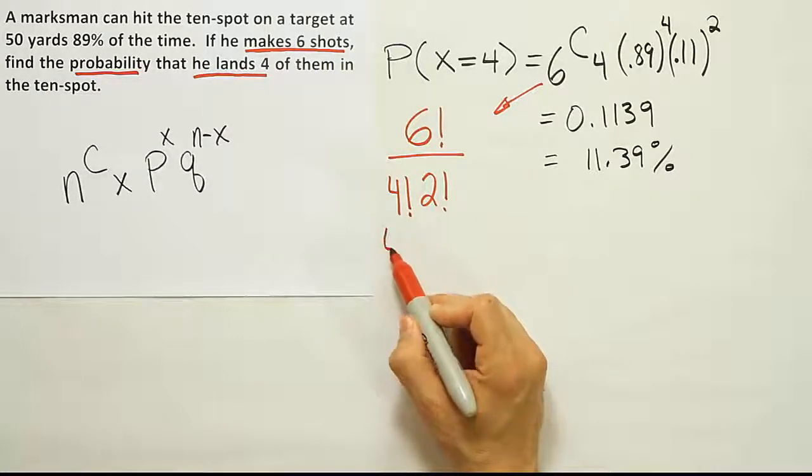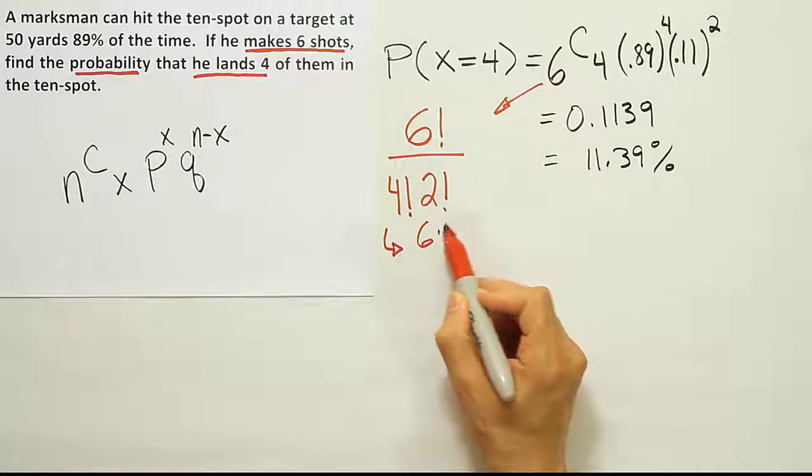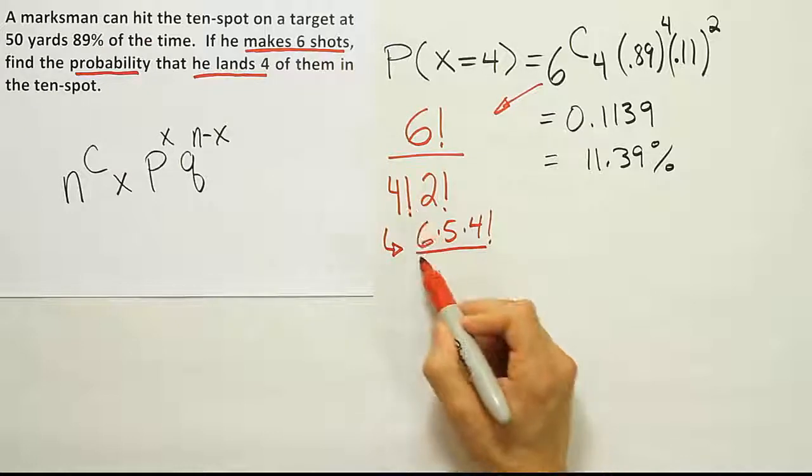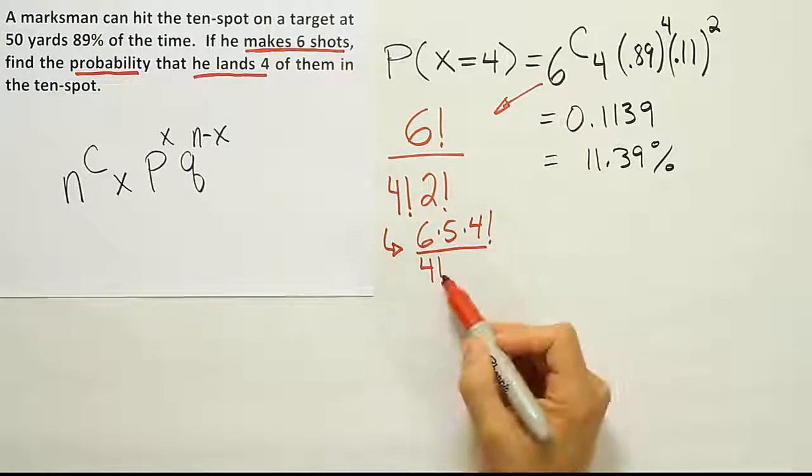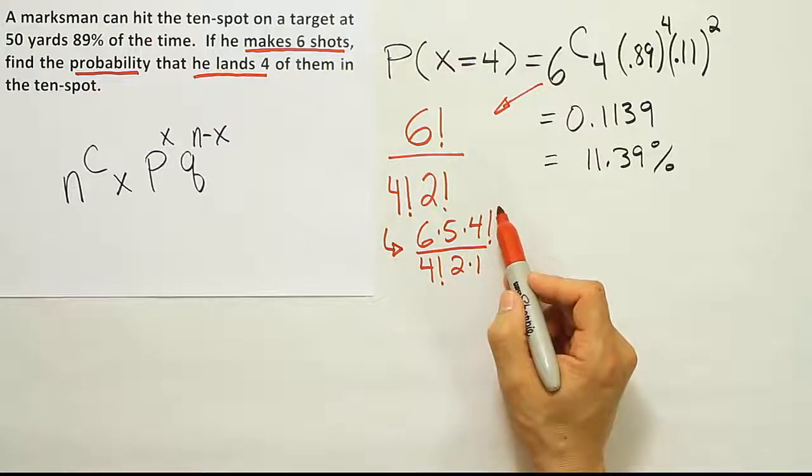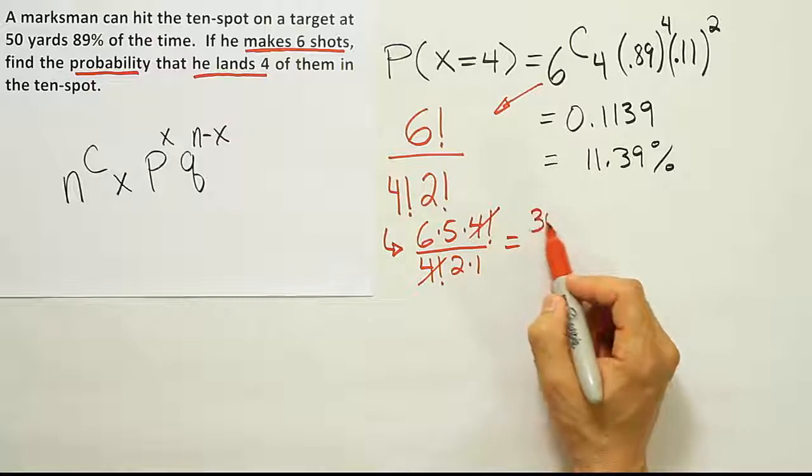Then once you've done that, you want to go ahead and simplify that a little further. So you'll go ahead and say, well, 6 factorial is 6 times 5 times 4 factorial. I'll stop there because I have a 4 factorial at the bottom. So I'll put that 4 factorial there. 2 factorial is just 2 times 1. Now what you can see is the 4 factorials will cancel, and you'll end up with 30, right.